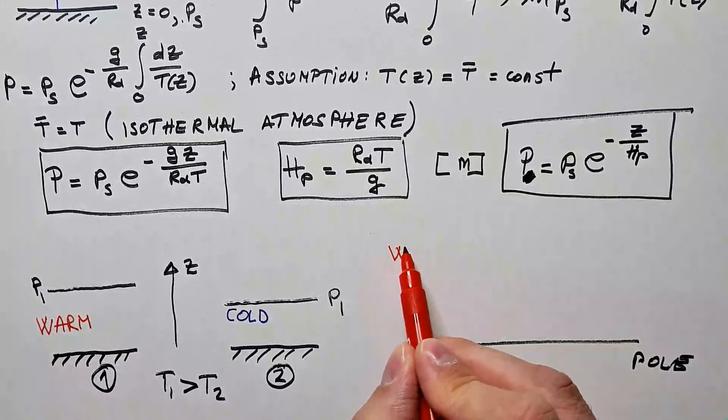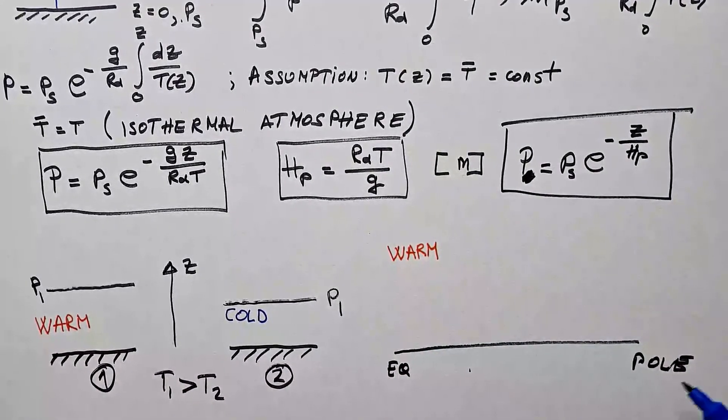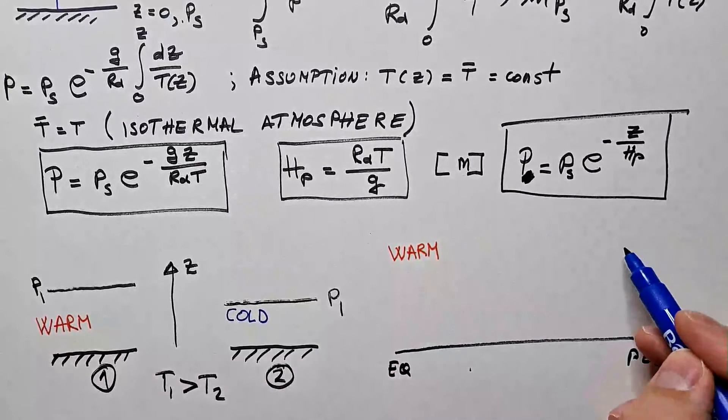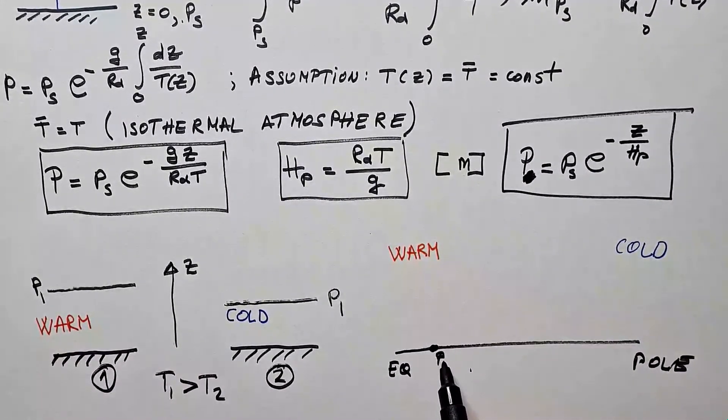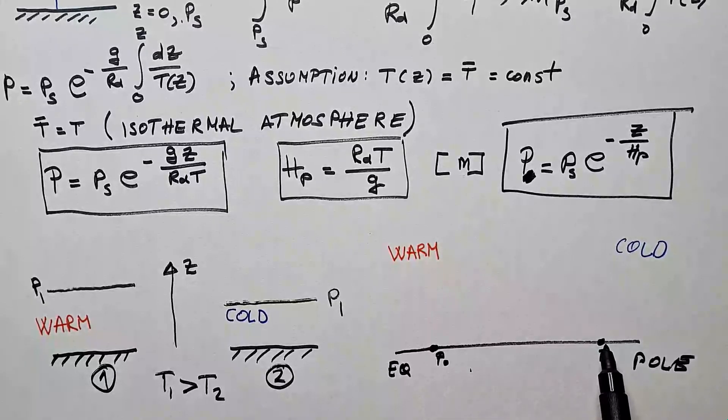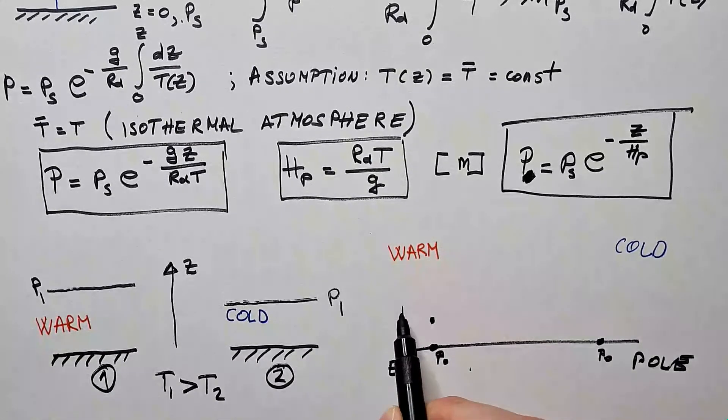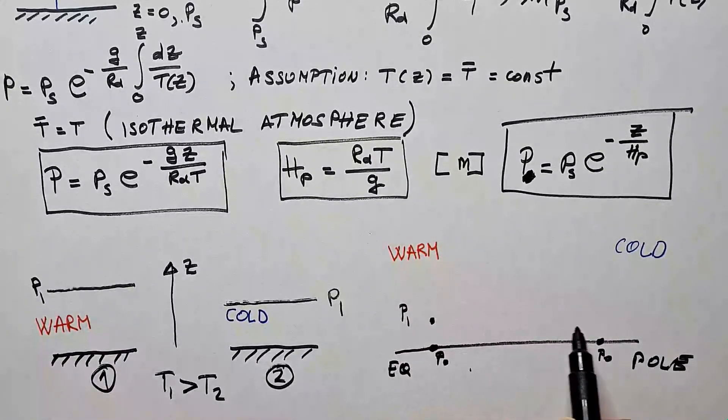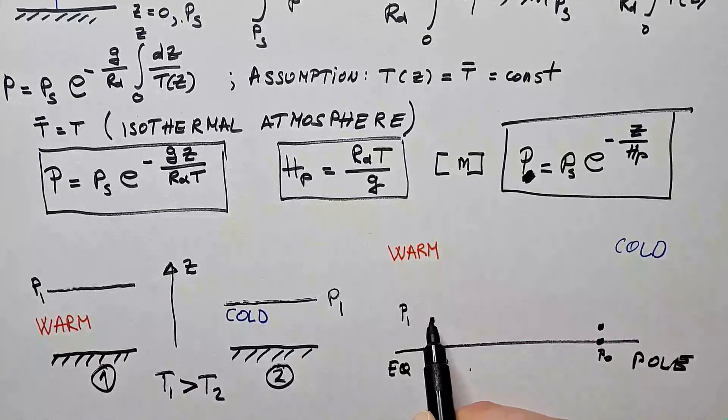Here, we have generally warm air above equator, and above, let's say, the north pole, we have cold air. If the surface pressure, p0, is the same at the equator at the pole, then, let's say, p1 is at this height in warm air. That means it will be at lower height at the pole.